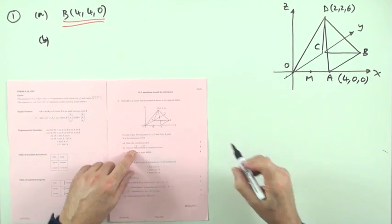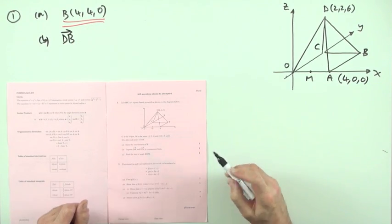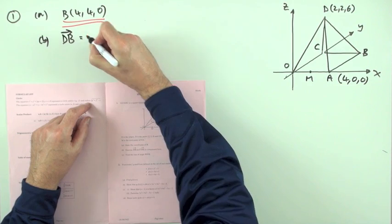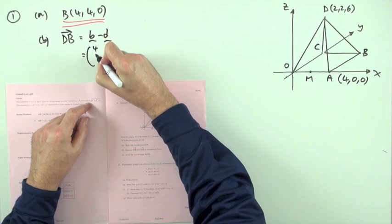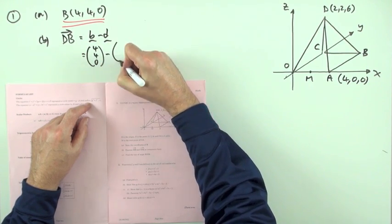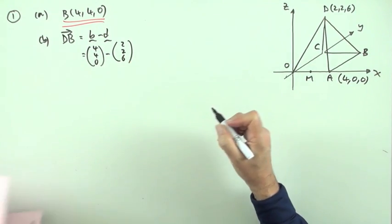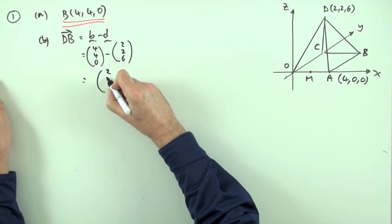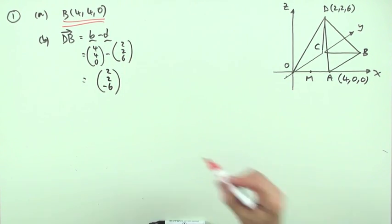B. Express DB, the move that takes you from D to B in component form. Well, to get that, we'd do B minus D. B, which we've just got is four, four, zero. D, you know, is two, two, six. So that's going to leave me with four take away two is two, four take away two is two, nothing take away six is negative six. So the first part then, DB is two, two, negative six.